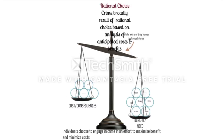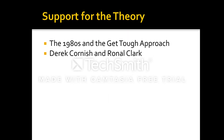Crime, then, doesn't pay because individuals engage in a cost-benefit analysis. Under rational choice, if this theory is true, people decide it's dangerous to commit crimes as a group — general deterrence — and then, specifically, I won't commit a crime because I'm likely to get caught and punished.